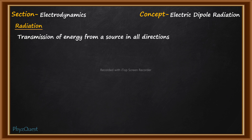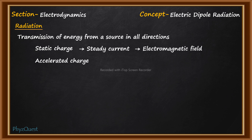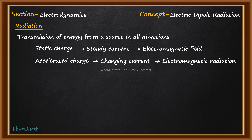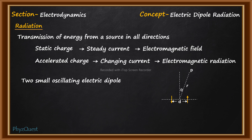In the case of a static charge, it leads to a steady current which leads to an electromagnetic field, whereas in the case of an accelerated charge it leads to a changing current which creates electromagnetic radiation. In this case we have two small oscillating electric dipoles — a dipole being two equal and opposite charges separated by a distance. An oscillating dipole means the two charges change their polarity at regular intervals. Because of the periodic changes in polarity, there is a periodic change in the electric field, which leads to the formation of electromagnetic radiation.